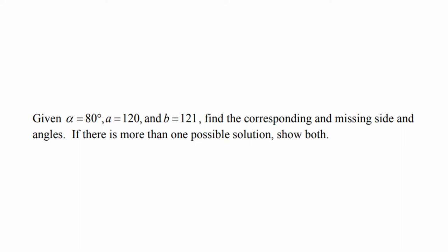Given alpha equals 80 degrees, A equals 120, and B equals 121, find the corresponding and missing side and angles. If there is more than one possible solution, show both.